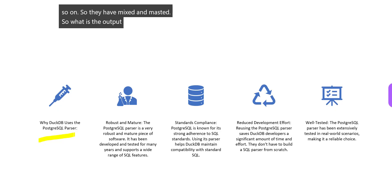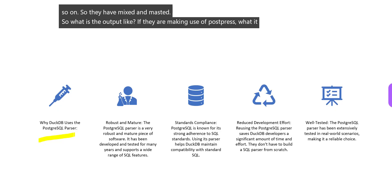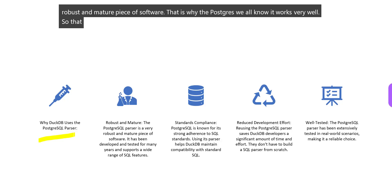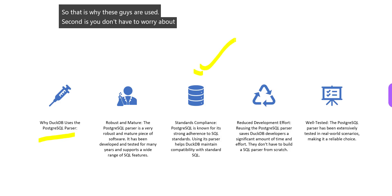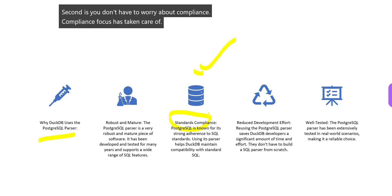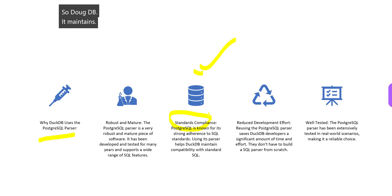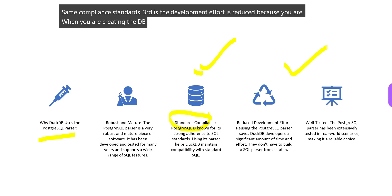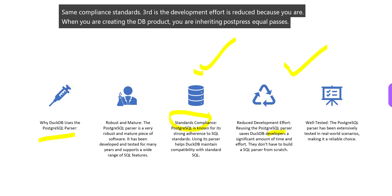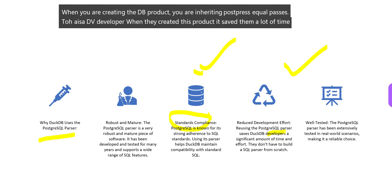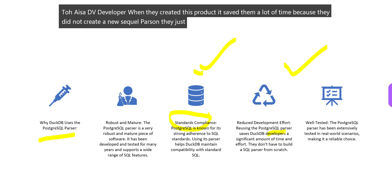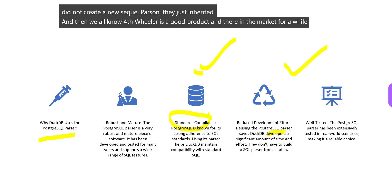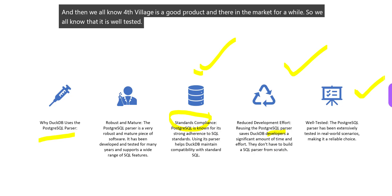By making use of PostgreSQL, DuckDB gets a very robust and mature piece of software — we all know PostgreSQL works very well. Second, you do not have to worry about compliance — PostgreSQL has taken care of that, so DuckDB maintains the same compliance standards. Third, the development effort is reduced — when creating DuckDB, they inherited the PostgreSQL SQL parser, saving a lot of time since they did not create a new SQL parser. And since PostgreSQL is well tested and has been in the market for a while, they can inherit it and it works fine.